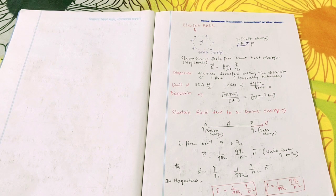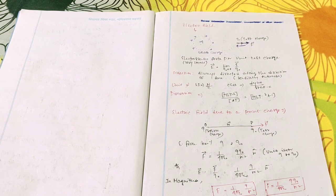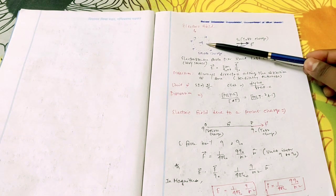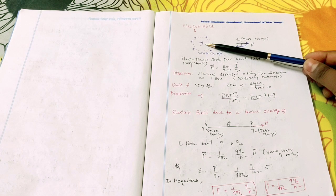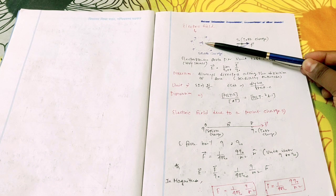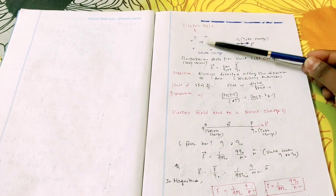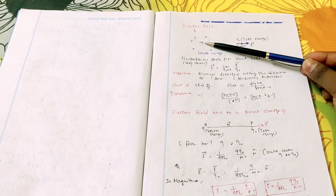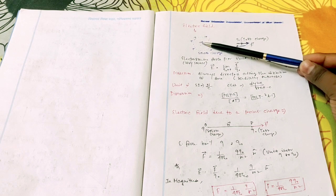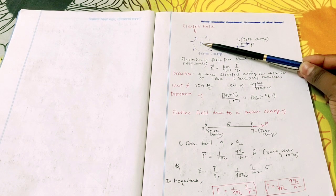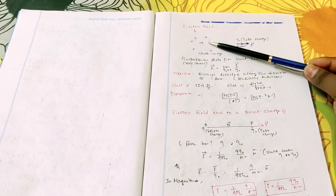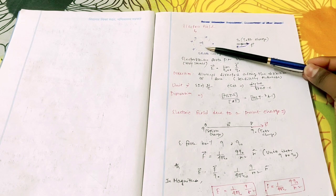First we have to know what an electric field is. To study the electric field, we consider a charged body carrying a positive charge, plus Q, placed at origin O. It is assumed that this positive charge produces an electrical environment in the surrounding space, and this electrical environment is called the electric field.